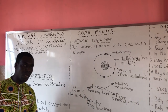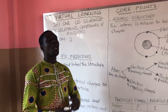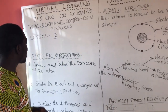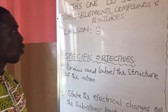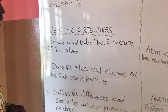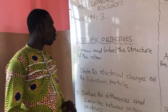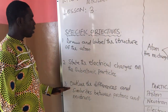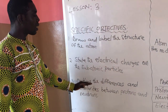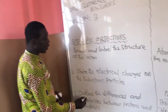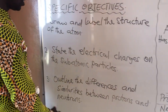Today we are going to look at the subatomic particles. I urge you to stay focused so that by the end of this lesson, you should be able to: draw and label the structure of the atom; state the electrical charges on the subatomic particles; and outline the differences and similarities between protons and neutrons.